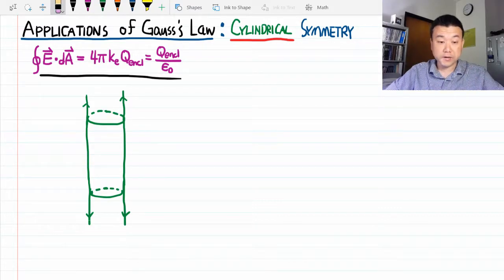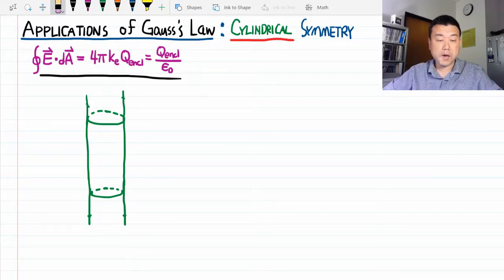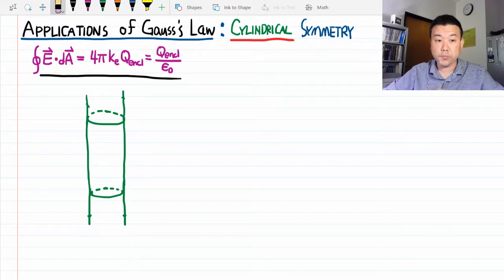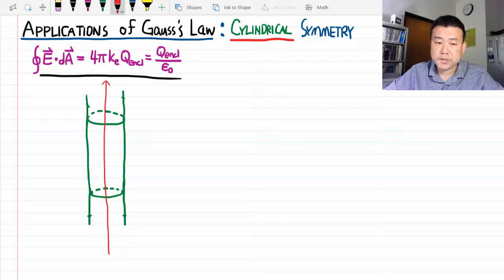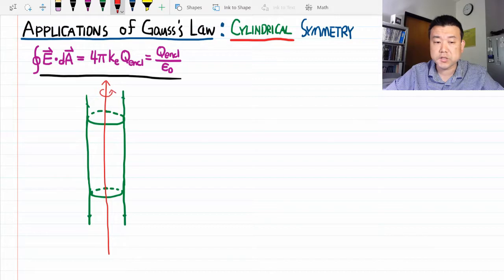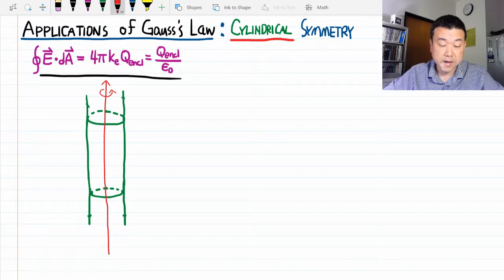With a cylinder like this, we have two clear symmetry operations. One is rotation. But unlike with a sphere, I have only one axis of rotational symmetry. I can rotate this cylinder around this axis and nothing will change.